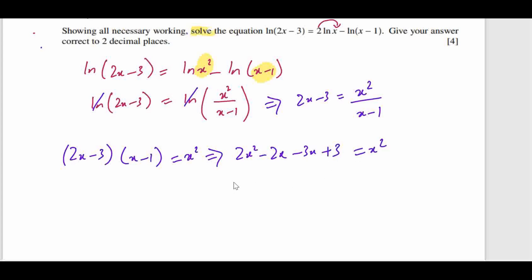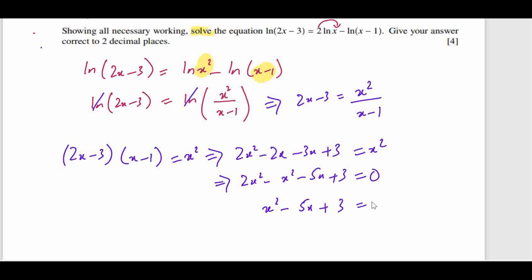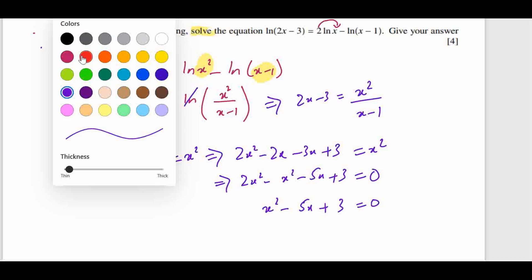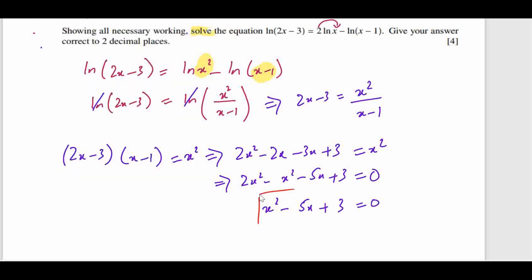Rearranging further: 2x² − x² − 5x + 3 = 0, which gives the quadratic equation x² − 5x + 3 = 0. This is a quadratic equation and we can use the quadratic formula to simplify it, or we can directly use the calculator.